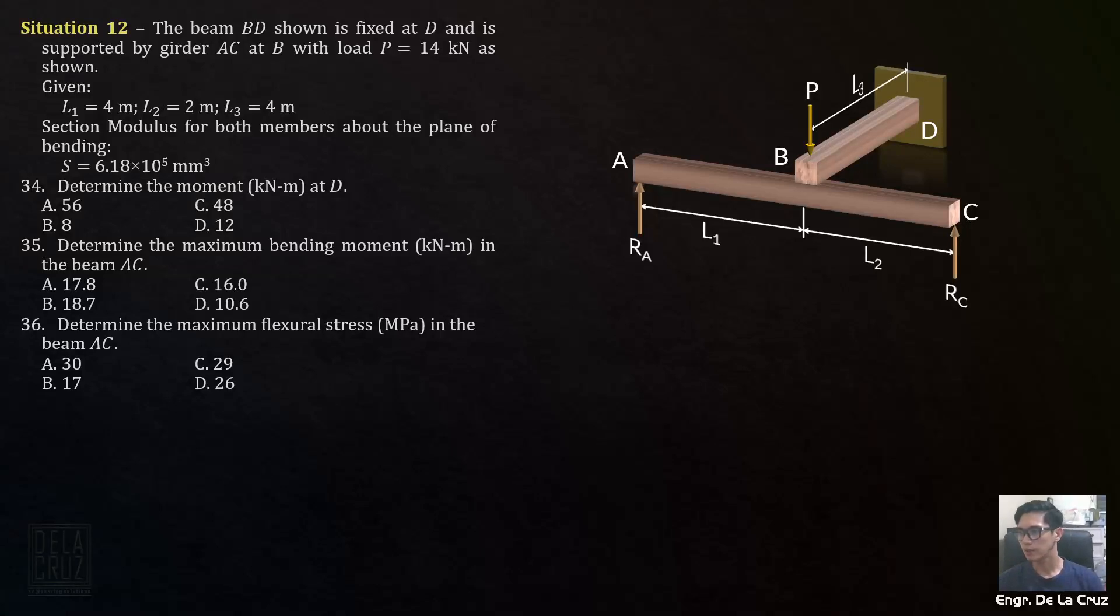Okay, so let's have situation 12. The beam BD shown is fixed at D. This is the beam BD and it's supported by a girder AC at point B. Supported by this beam AC. Load P is 14 kN and the values of each length are given. Section modulus for both members about the plane of bending is 6.18 times 10 raised to 5 mm cubed.